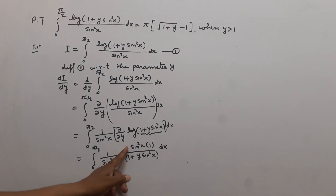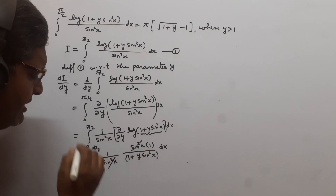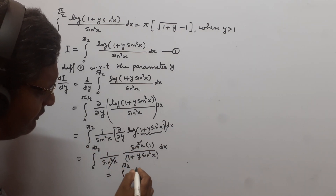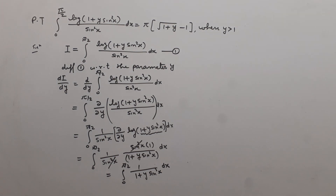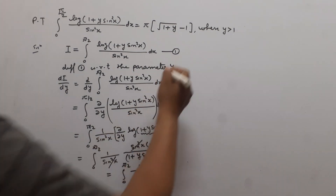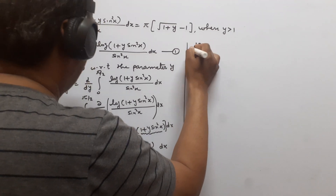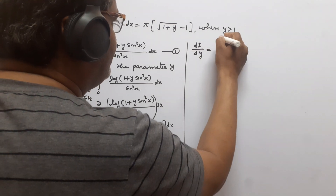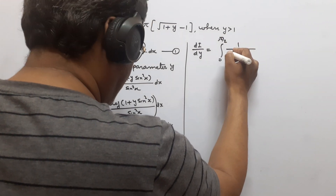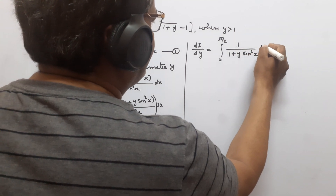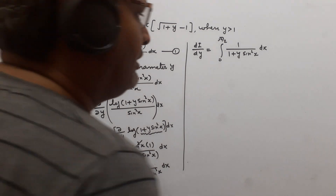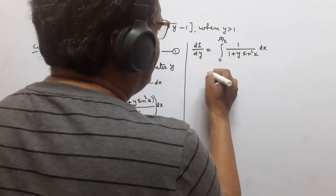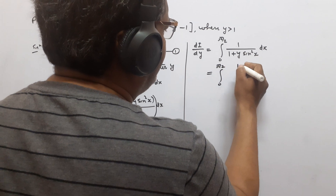Now this sin²x in the numerator and sin²x in the denominator cancel out. So we get dI/dy = ∫₀^(π/2) 1/(1 + y·sin²x) dx. Now we integrate this: dI/dy = ∫₀^(π/2) 1/(1 + y·sin²x) dx.